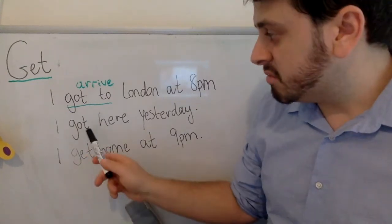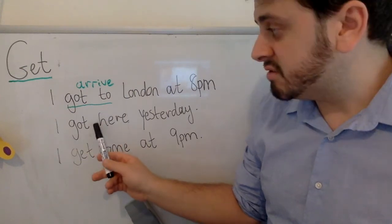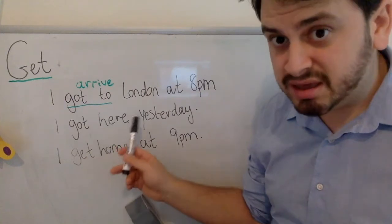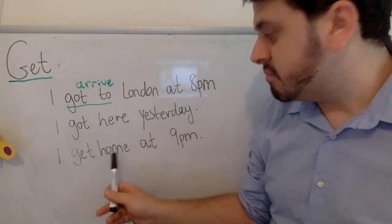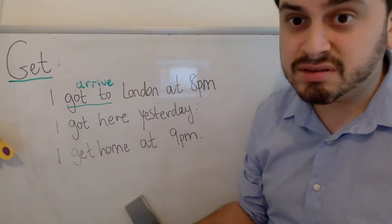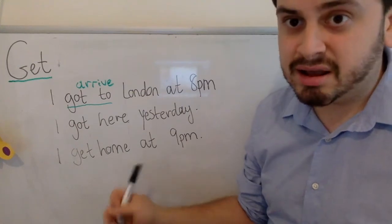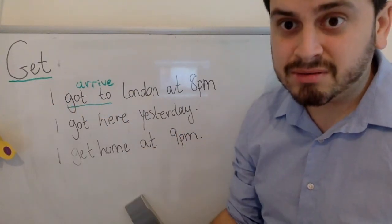Just remember: with 'here' and 'there' we don't need 'to.' We can say 'I got here yesterday,' meaning 'I arrived here yesterday.' And with 'home' — 'I get home at 9 pm' — this is present simple, expressing a routine: I usually get home at 9 pm. So 'get' can also mean 'arrive.'